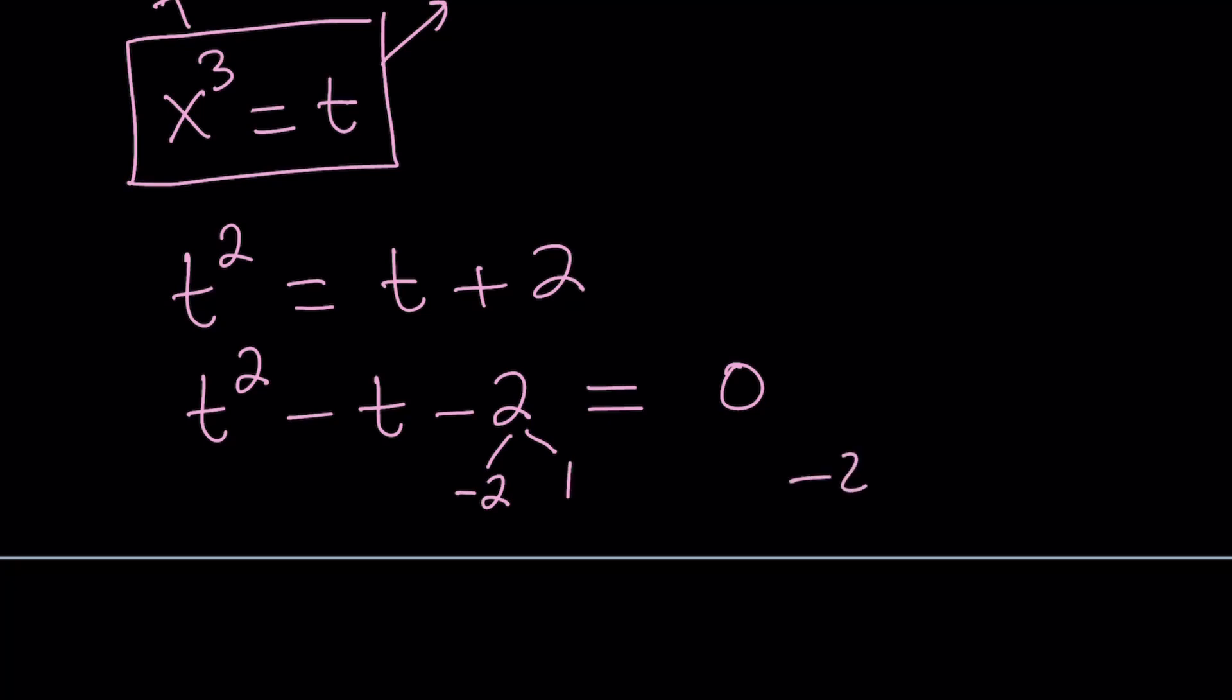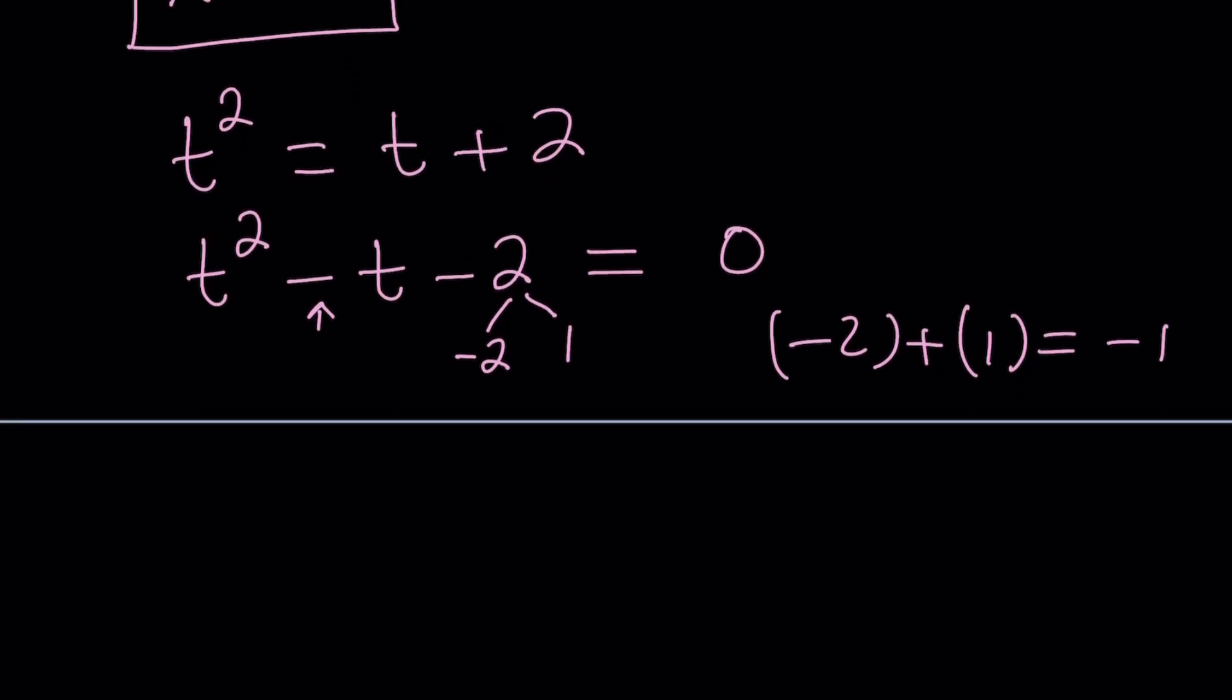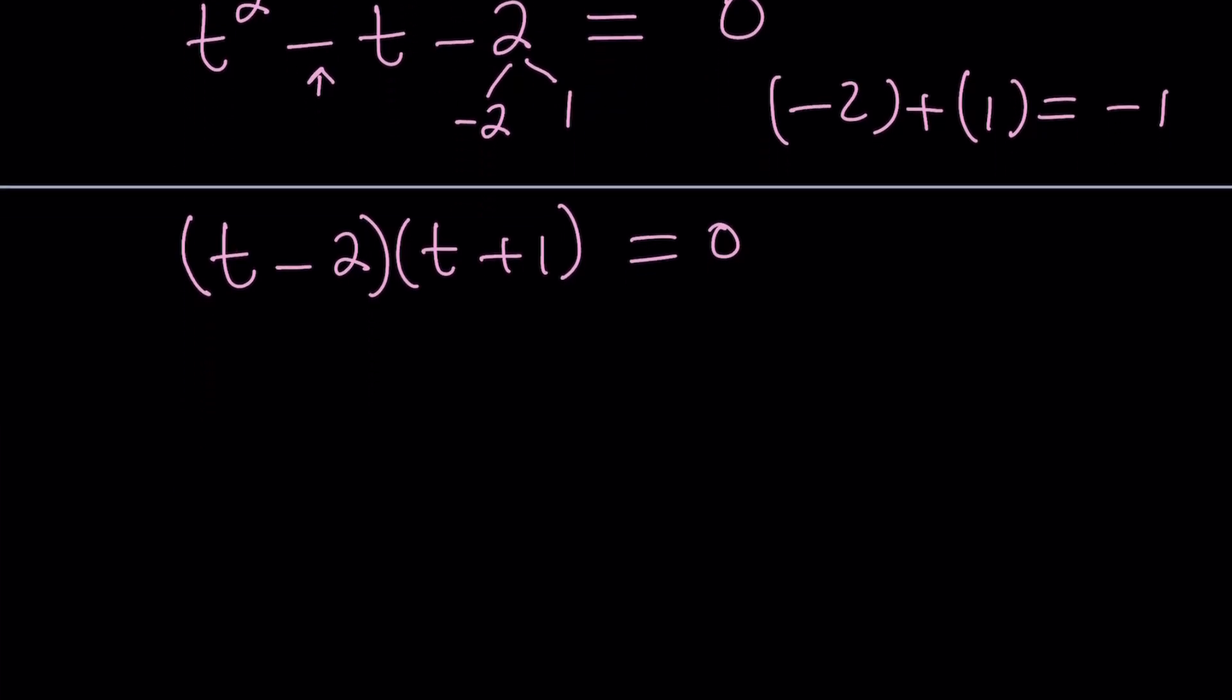Think about it. Negative 2 plus 1 is negative 1, and that's the coefficient of t right here. That's what we are looking for. So now this equation is factored as t minus 2 times t plus 1. And this gives us two solutions, but I told you this is a hexic equation, and there should be six solutions, with repetitions. Let's go ahead and take a look at each one of them.